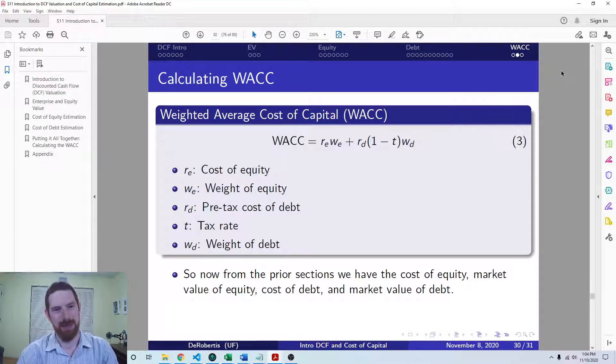So this is just focusing on debt and equity. You could have a third term in here for preferred stock as well, or additional terms if you had different seniorities of debt and you want to include those as separate components with different costs of debt. There are different ways to specify this equation, but this is kind of the general format.